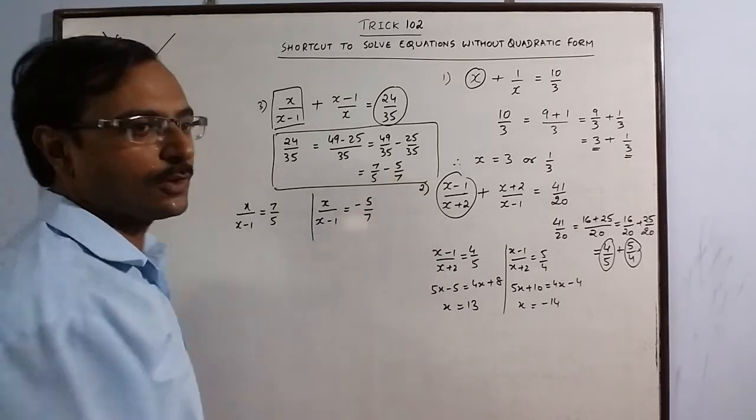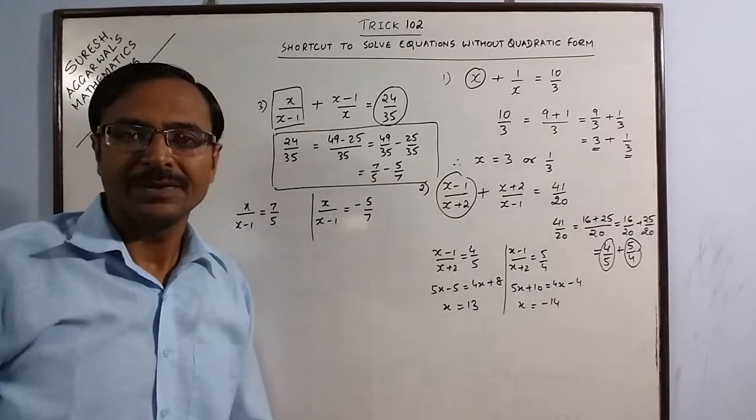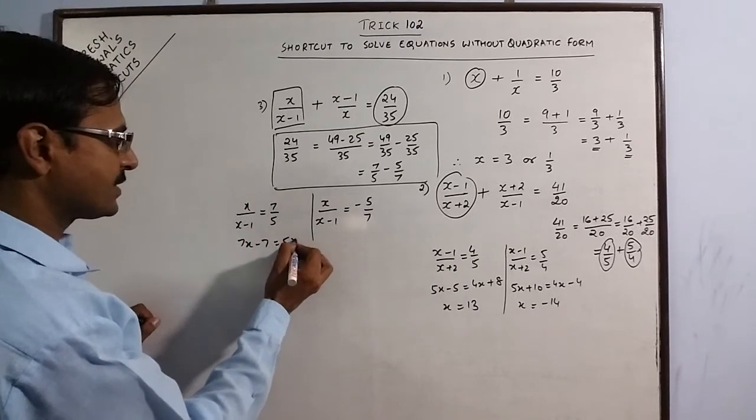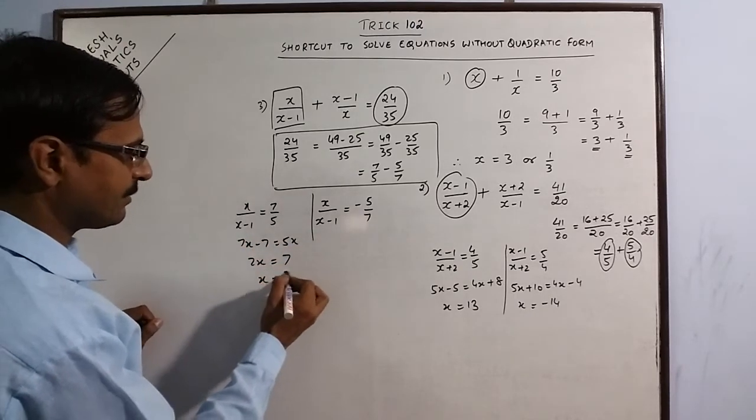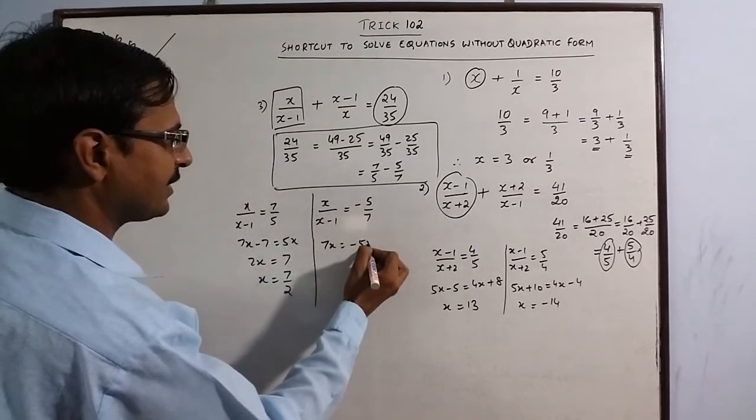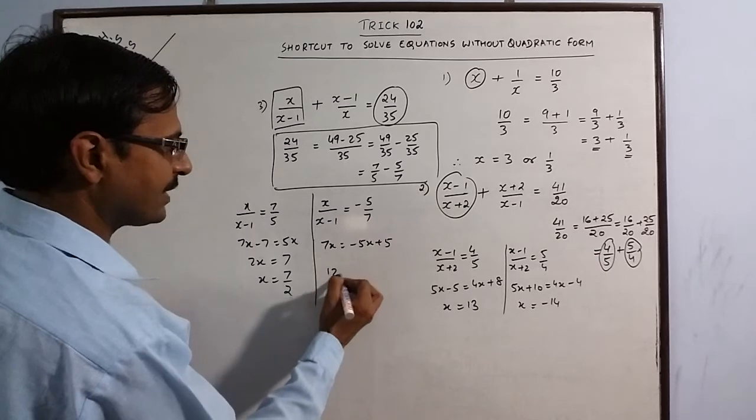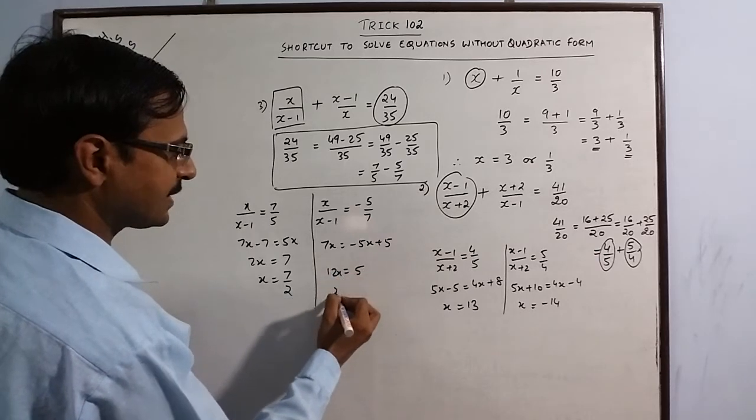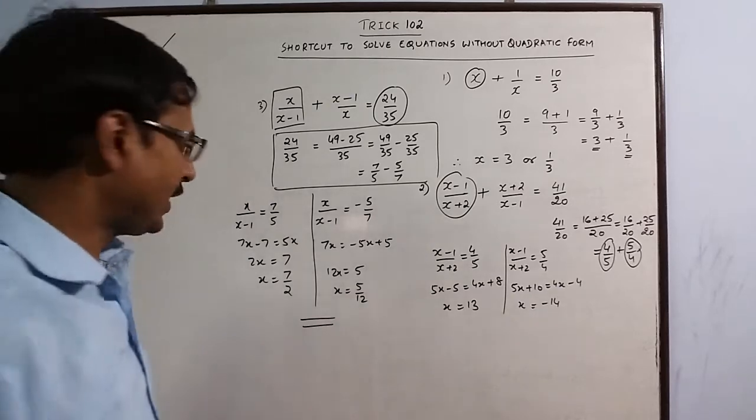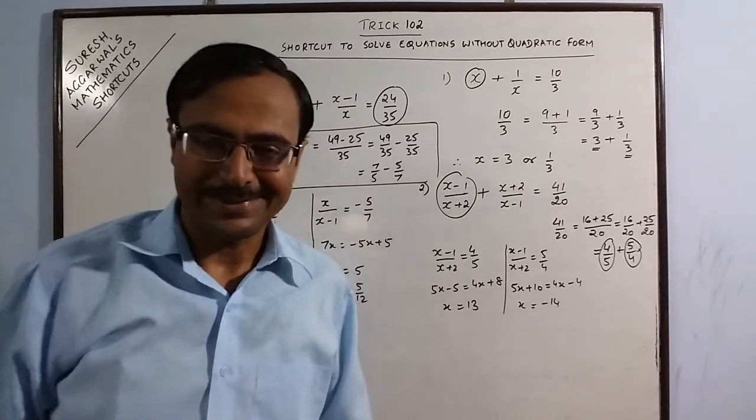So, this is 7x minus 7 equal to 5x. So, 2x is 7. So, x comes out to be 7 by 2. Here, 7x equal to minus 5x plus 5. So, 12x equal to 5. So, x gives the value 5 by 12. So, 7 by 2 and 5 by 12 is the required answer.